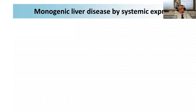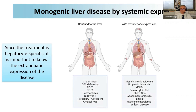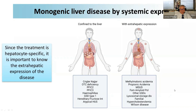If we look at monogenic diseases, we can classify them according to extrahepatic expression. Since the treatment is hepatocyte-specific, it is important to note extrahepatic expression. Some diseases are almost exclusively confined to the liver, such as Crigler-Najjar syndrome, OTC deficiency, progressive familial intrahepatic cholestasis, and hemophilias. But many others are expressed outside the liver — organic acidemias, maple syrup urine disease, familial amyloid polyneuropathy, and others you might be more familiar with, including Wilson disease.